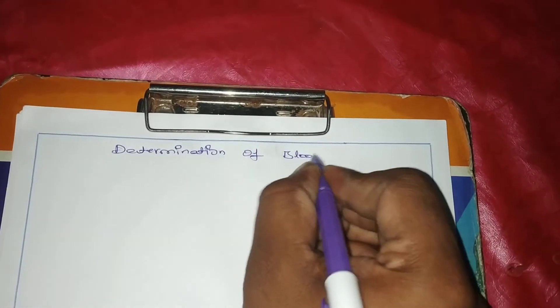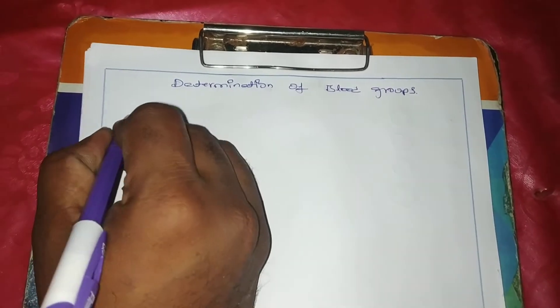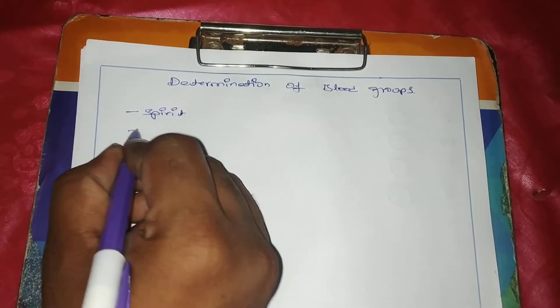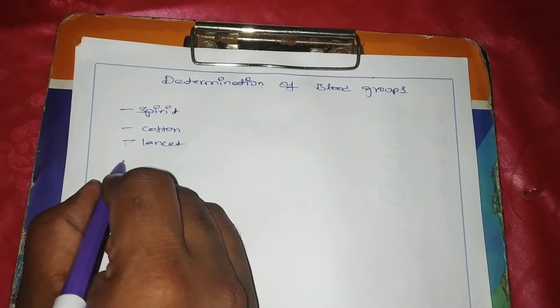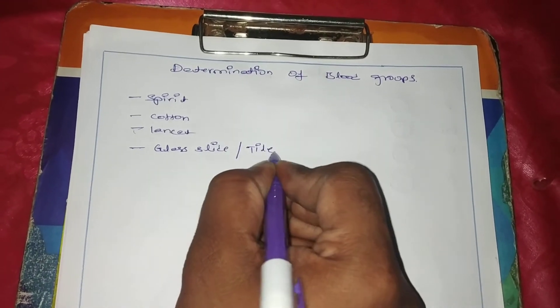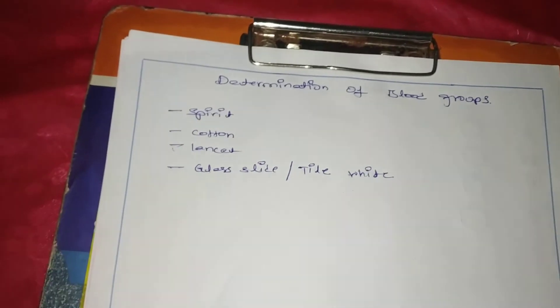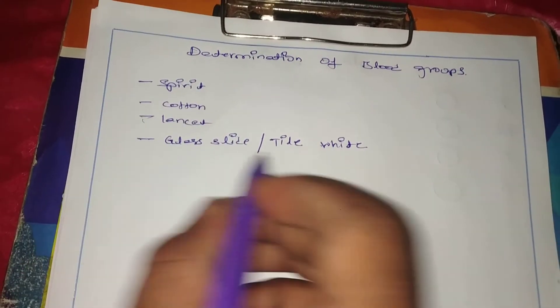We have to determine the blood group of the given patient sample. The apparatus we need: first is spirit, second is cotton, a lancet or needle to puncture the finger, and a glass slide or tile. The tile should be white — it should not contain any design, black spots, or anything. It should be clear and white.